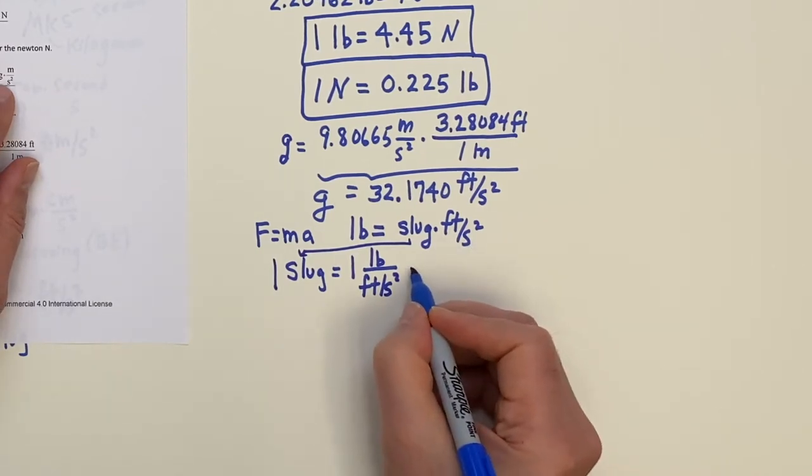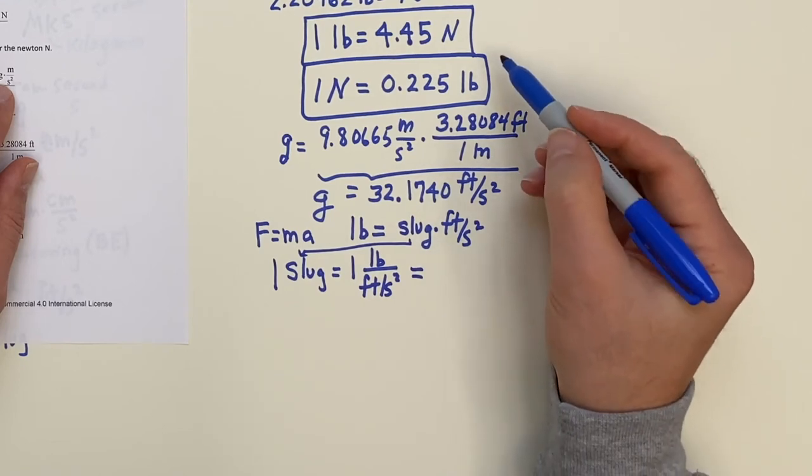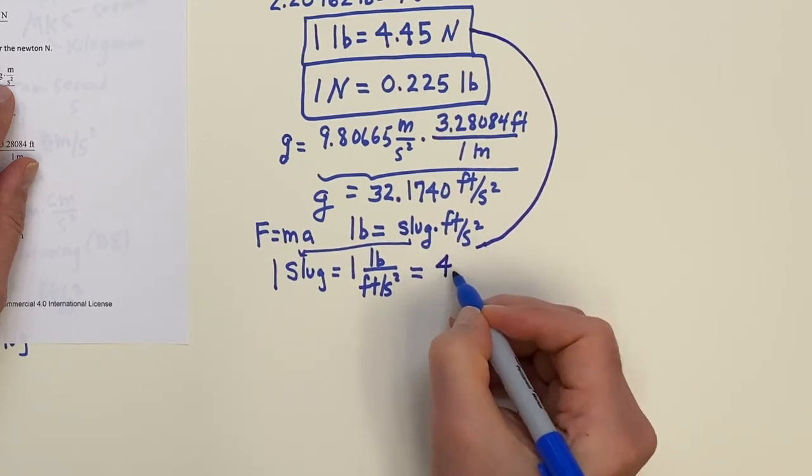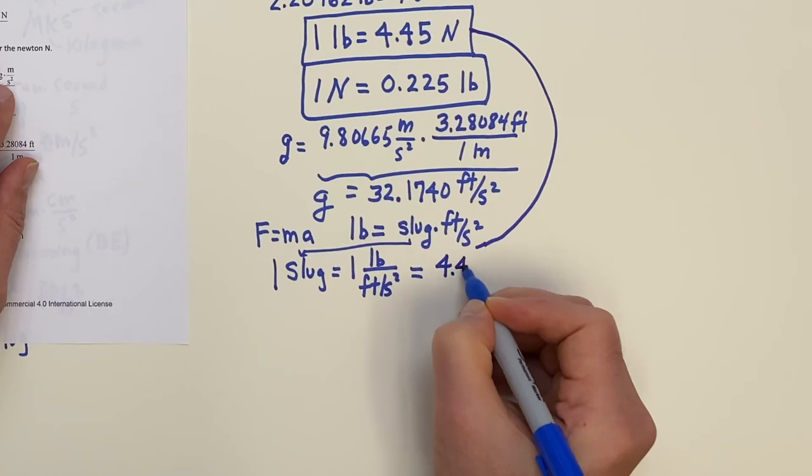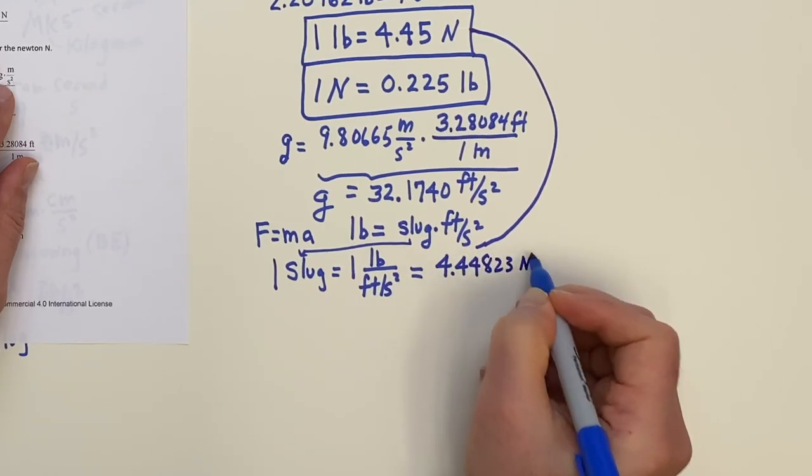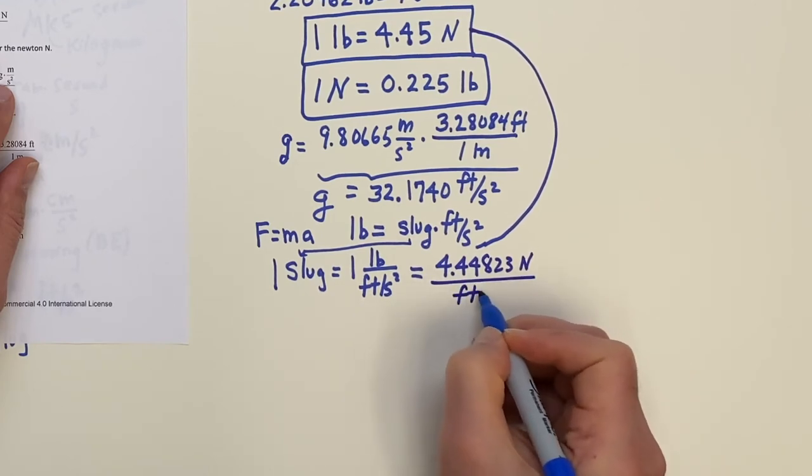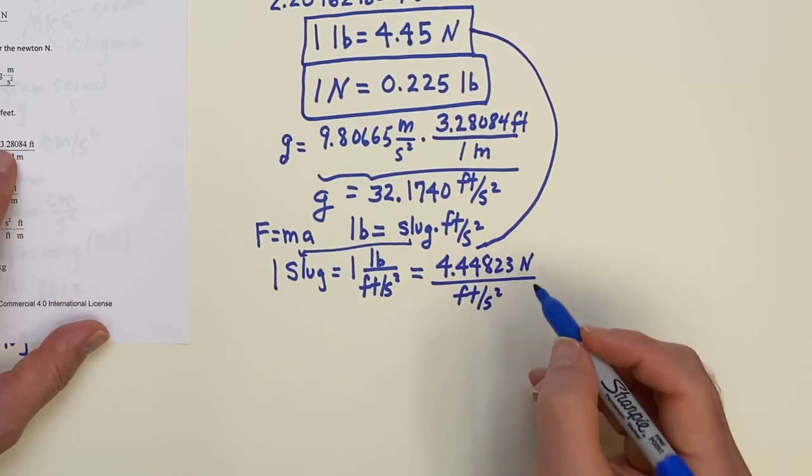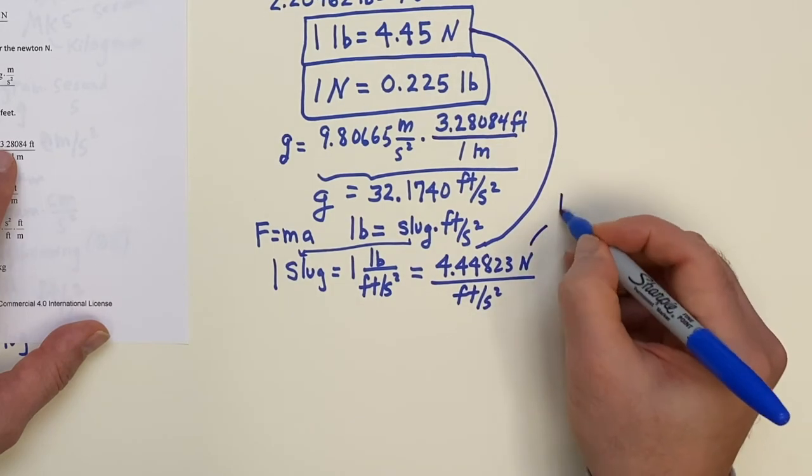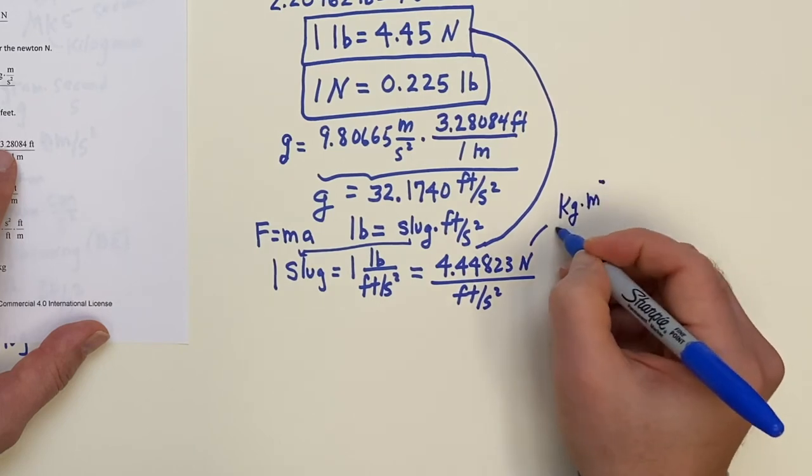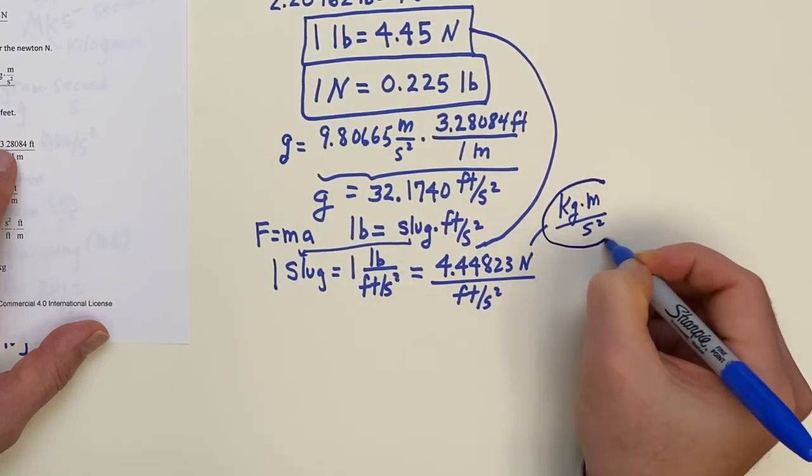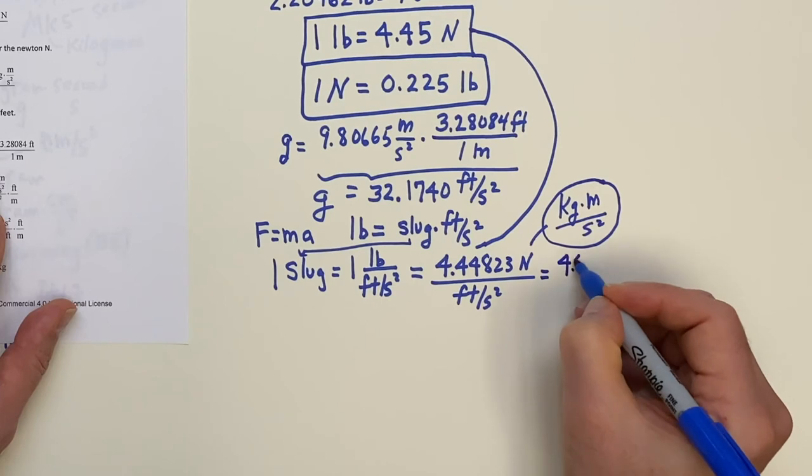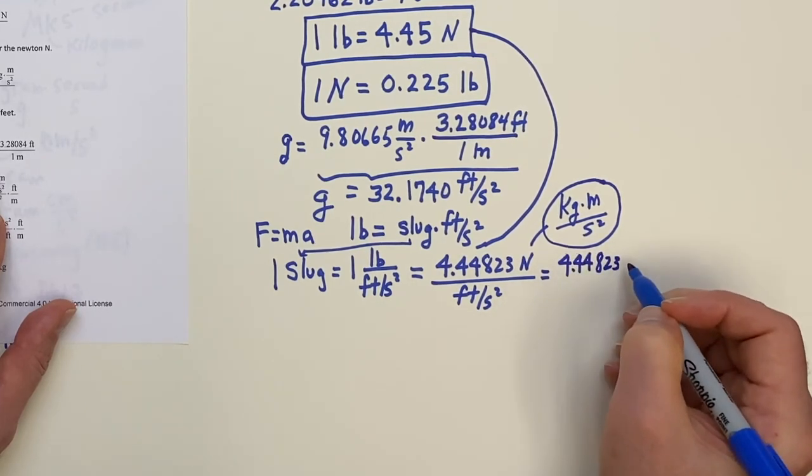Now if I solve for the slug, I get one pound over feet per second squared. And that's one slug. Solving for the slug here, get pound over feet per second squared. But now I can use the conversion for the pound, which I figured out up here to bring in newtons. And if I do that and keep the accuracy, 4.44823 newtons over feet per second squared. And now I can write out, the next step is to write out for the newton. Newton is kilogram meter per second squared. See, that is what a newton is.